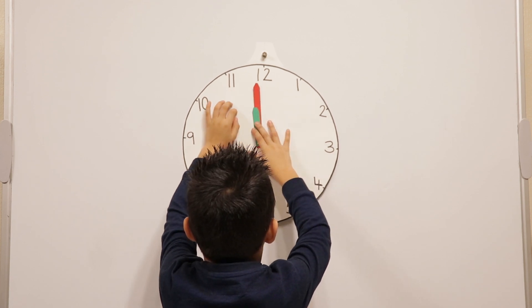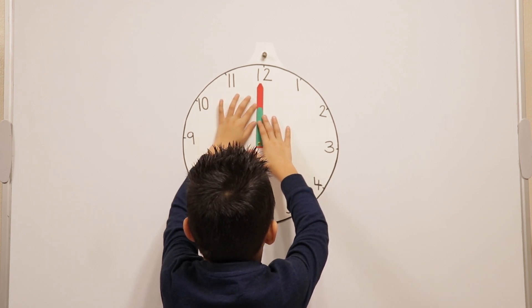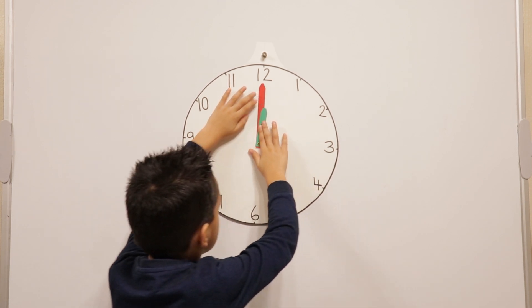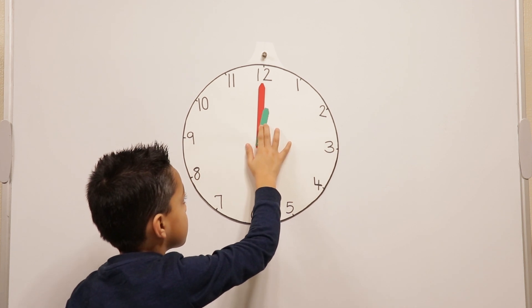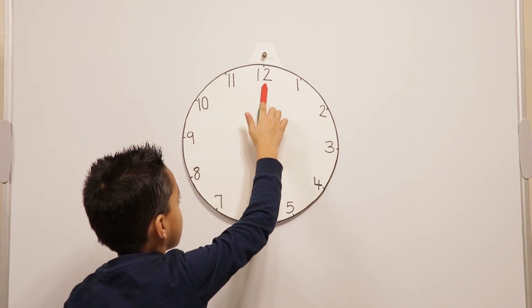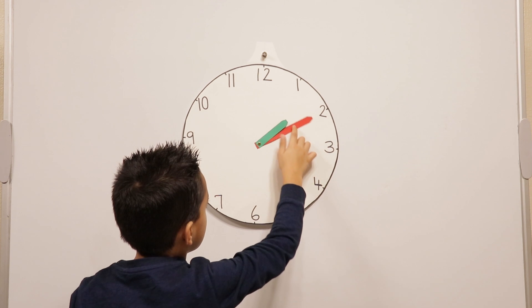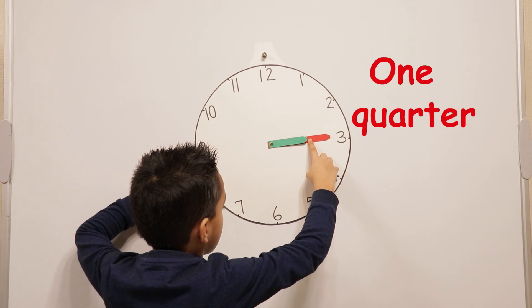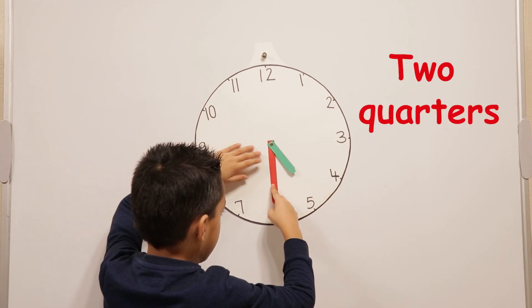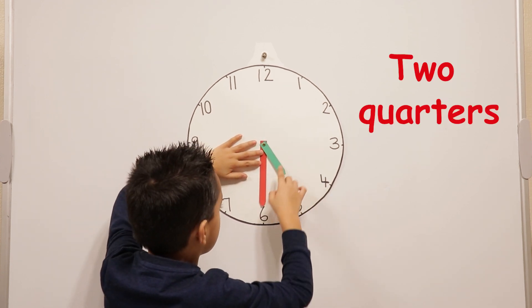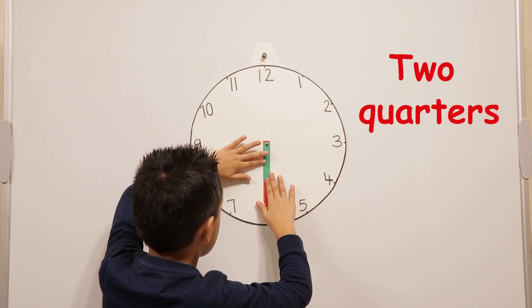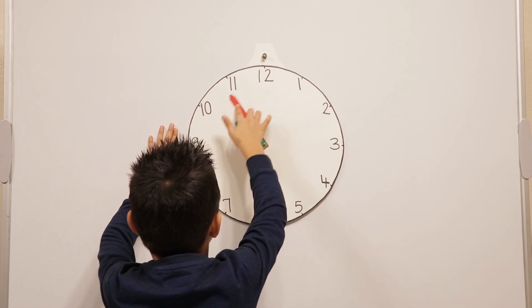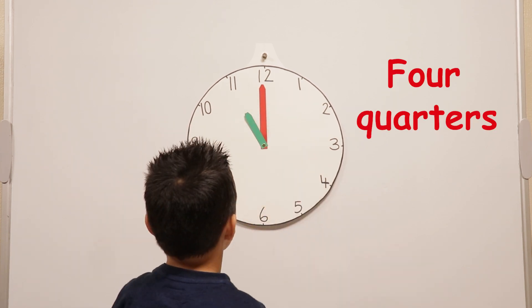Can you use both hands together to count the four quarters going clockwise? When it goes to the three, that's one quarter. And then two quarters make a half, so when it goes to the six, that's two quarters. That's three quarters, and when it goes to the twelve, that's four quarters.